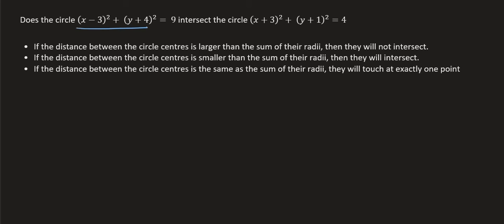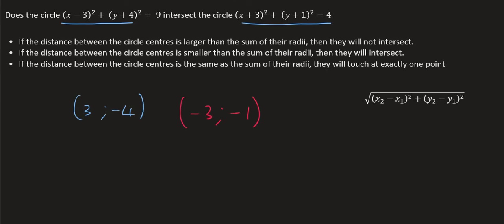In this example we've been given two circles. We just need to know their centers — we don't need to draw them out. The first circle's center is (3, -4) and the other circle's center is (-3, -1). We can use the distance formula to work out the length between them. That gives us the square root of (3 - (-3))² + (-4 - (-1))², which equals 6.71. So 6.71 is the distance between the two circle centers.